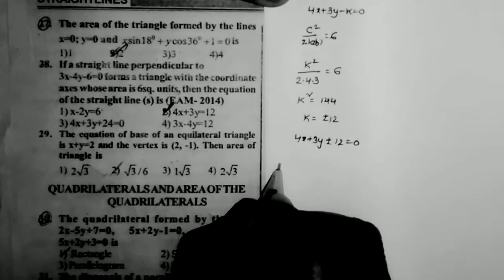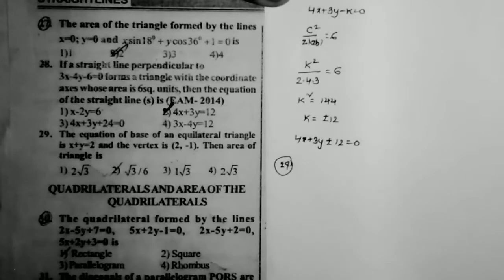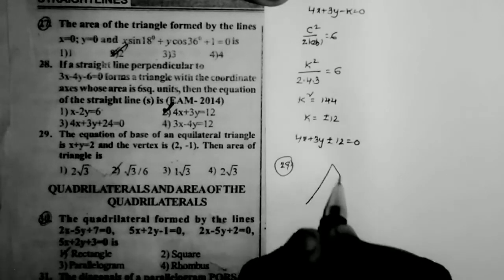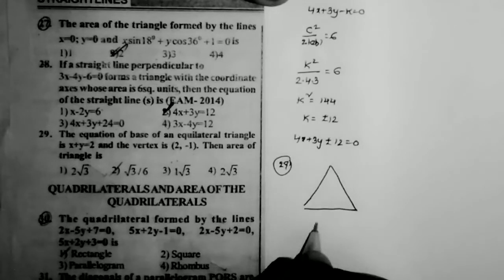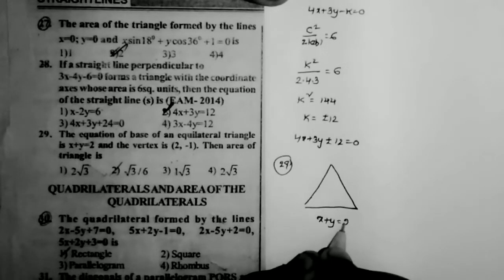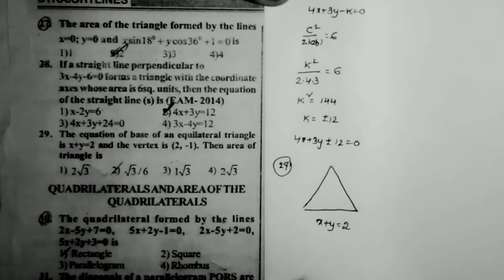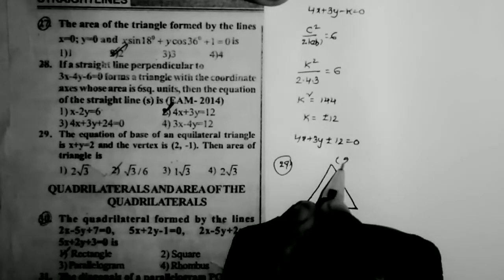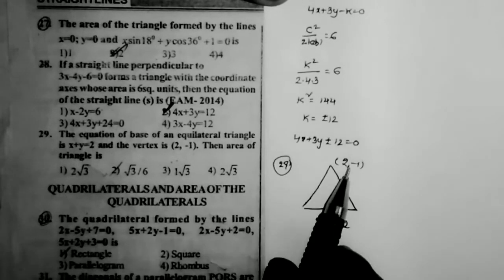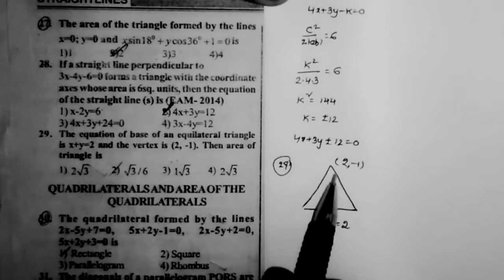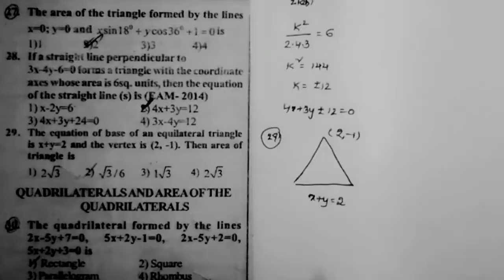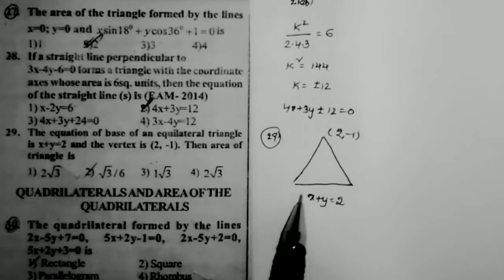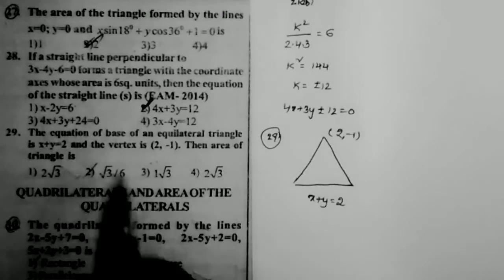Sum number 29: the equation of the base of an equilateral triangle is x + y = 2, and the vertex is (2, -1). Find the area of the triangle. The base is x + y = 2 and the vertex (2, -1) is not satisfied by this equation, so we take it as the opposite vertex.